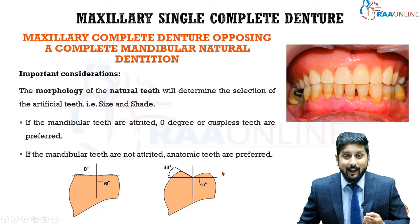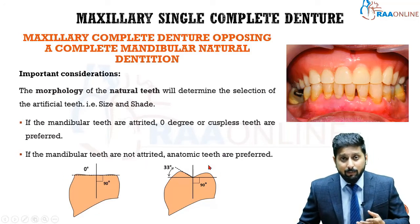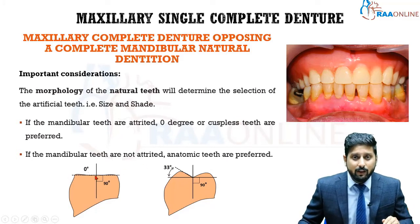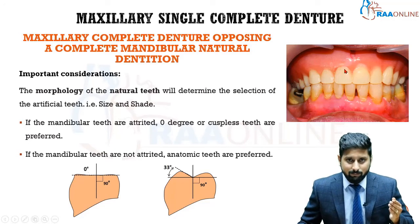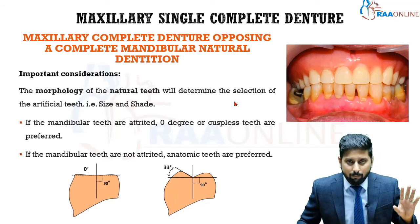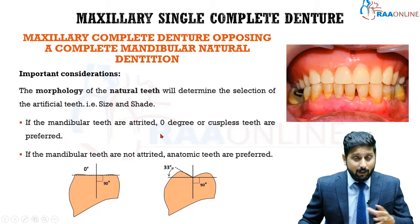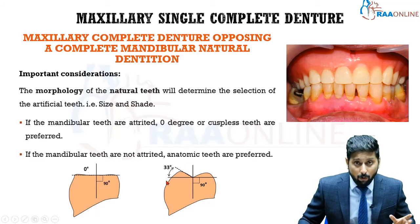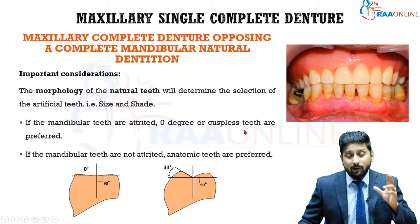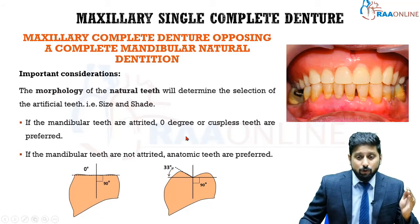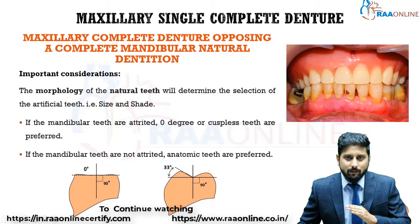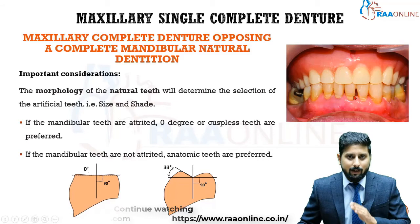The morphology determines whether you go for zero-degree acrylic teeth, semi-anatomic, or anatomic (33-degree) teeth. If the mandibular teeth are fully attrited and flat — zero degrees — you need to choose zero-degree teeth for the denture, so they align properly for stability. If the patient's natural teeth are not attrited and have proper cusps, go for anatomic acrylic teeth to satisfy function, stability, and aesthetics. Choose the morphology, size, and shade of the acrylic teeth based on what already exists in the patient's mouth — the opposing mandibular natural dentition is your reference.